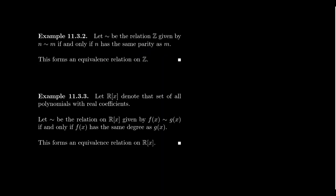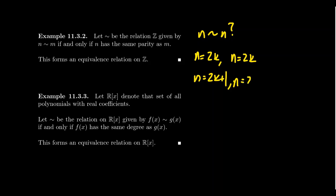Let's verify the parity relation is an equivalence relation. For reflexivity, we need to show n is related to n. There are two cases: if n is even, then n is even, so they have the same parity. If n is odd, then n is odd. In either case, n has the same parity as n, so it's reflexive.